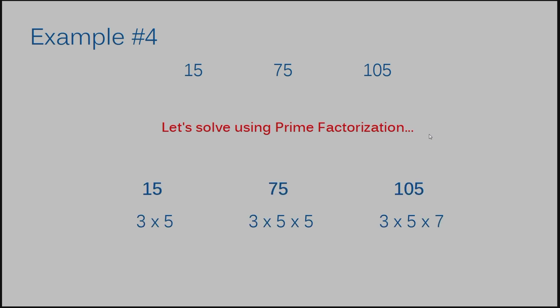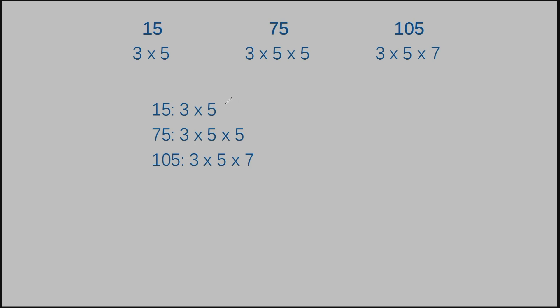We start with prime factorization of our numbers. I'm not going into detail of how to do that here — I have a prime factorization video you may need to check out, as prime factorization is a skill within itself. If you start with 15, the prime factorization is 3 × 5. For 75, you get 3 × 5 × 5. And for 105, you get 3 × 5 × 7. I've listed these numbers with their prime factorizations out to the right.